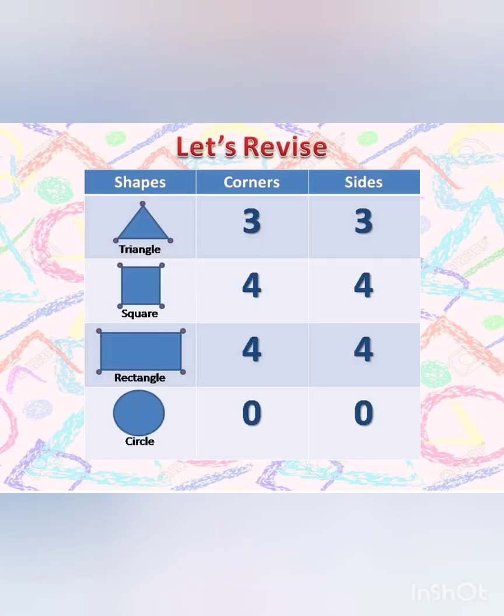Dear students, let's revise. Whenever you look at a shape, you have to observe two things: the number of corners and the number of sides. Here, the red dots are depicting the corners of the shape, and the line segments which join these red dots are the sides. As you can see, a triangle has three corners and three sides.